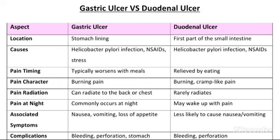Next difference is pain character — toh kis tarah ki pain hoti hai. Jo gastric ulcer ki pain hai, woh burning sensation hoti hai, jalan mehsoos hoti hai. Aur jo duodenal ulcer ki pain hai, woh burning sensation and cramp-like pain hoti hai.